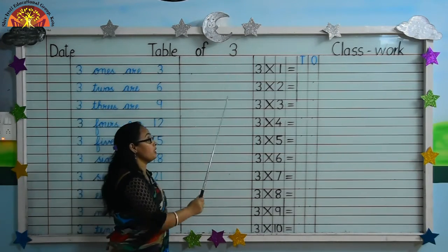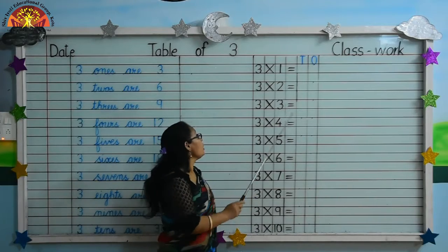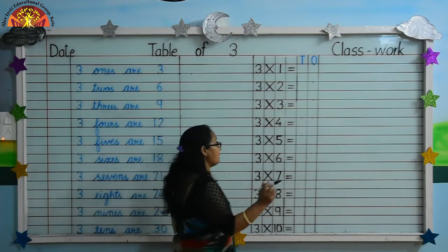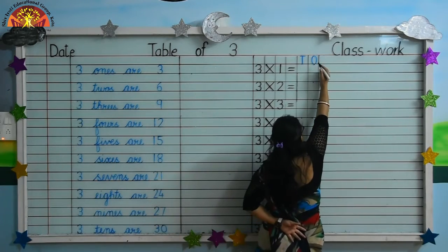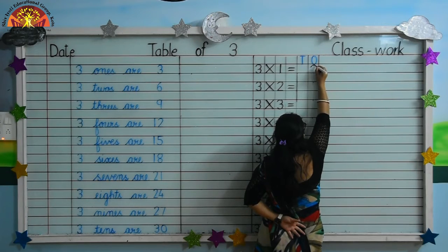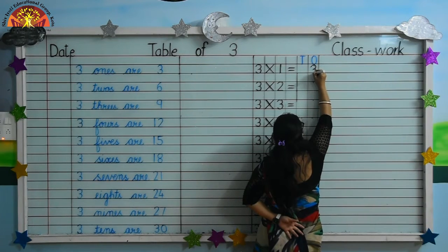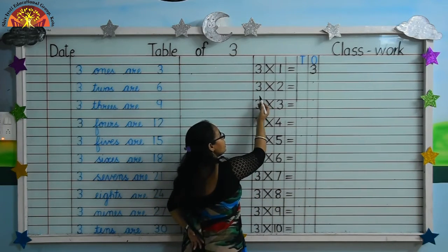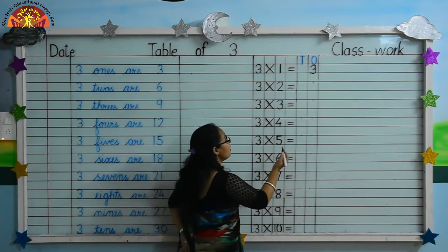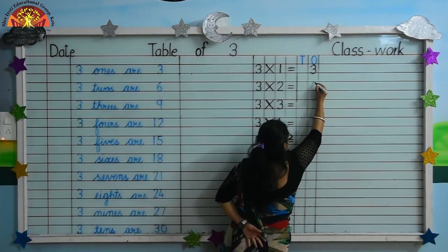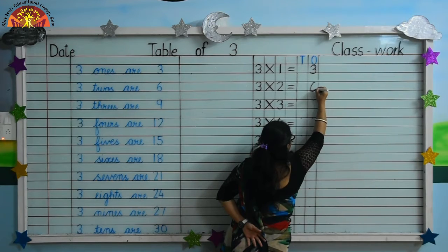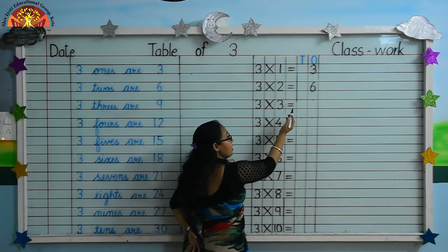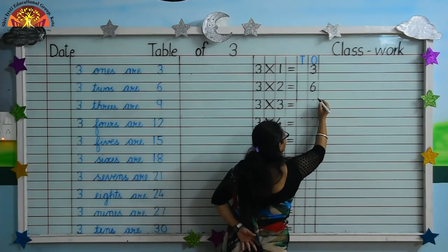Table of three. Kids, now you tell me. Three ones are three — write three at the place of ones. Next is three twos are six — write six. Three threes are nine — write nine.